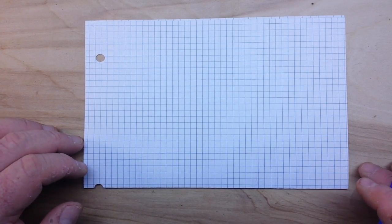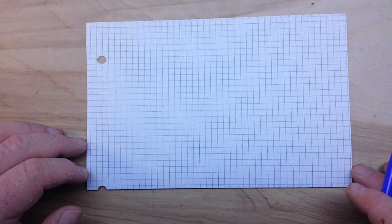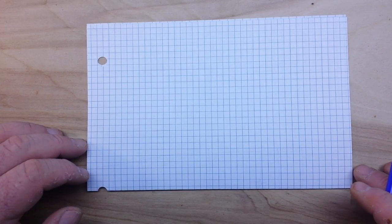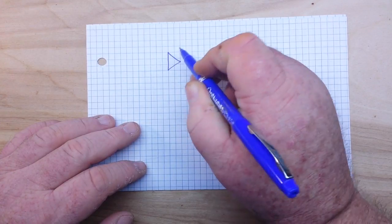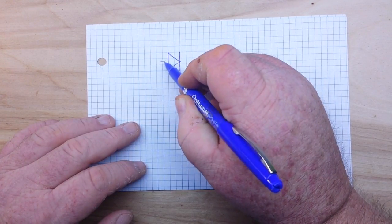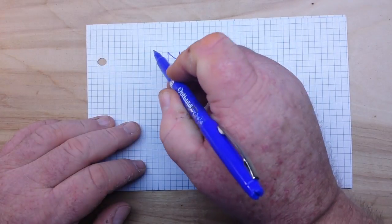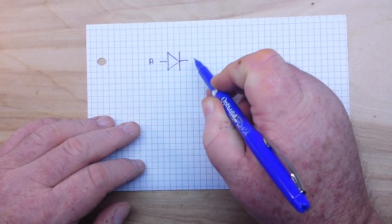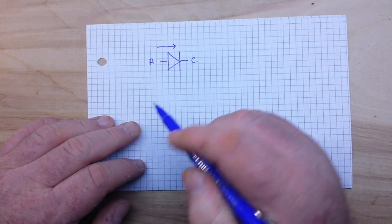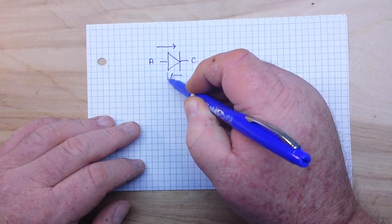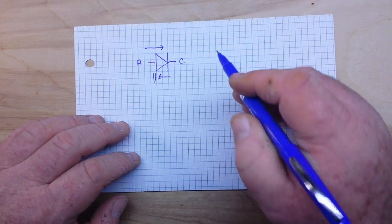Today we're going to talk about diodes. In the class I'm teaching right now we have a module on diodes. As we know, diodes are electricity's one-way valve. Here's your basic diode symbol — this is your anode, this is your cathode. Current can flow in this direction; current is blocked in this direction.